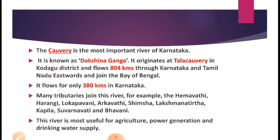Another most important east flowing river is river Kaveri, but Kaveri does not flow through the northern Maidan region as Krishna does. Kaveri river is also known as Dakshina Ganga because, just like the sacred Ganga, Kaveri is a holy river — its origin at Talakaveri is a holy place. It is called Dakshina Ganga because it is located in the southern part of India.